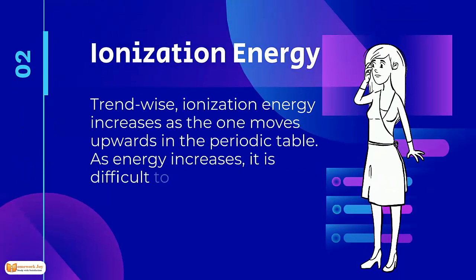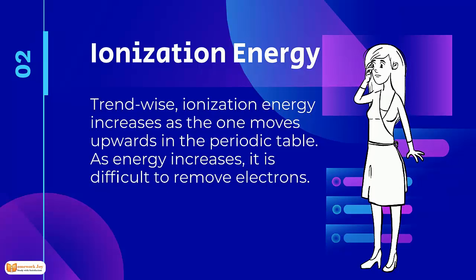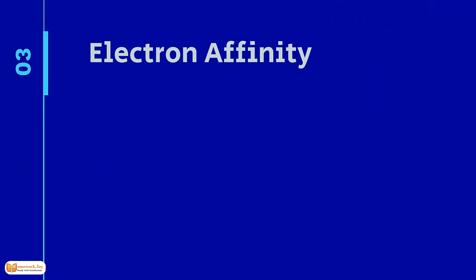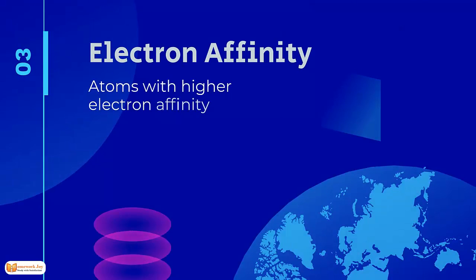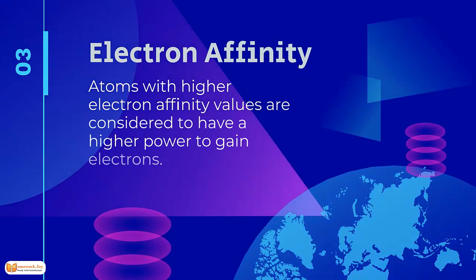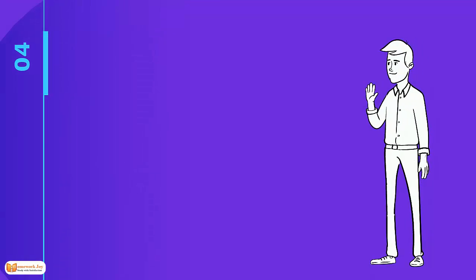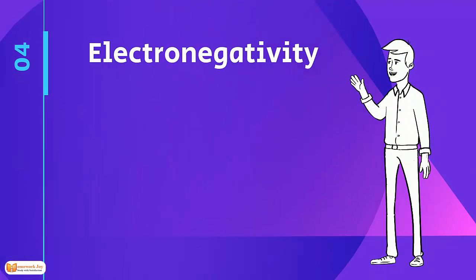Electron affinity: atoms with higher electron affinity values are considered to have a higher power to gain electrons. For example, chlorine (Cl) has the highest electron affinity.